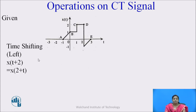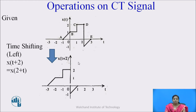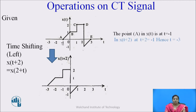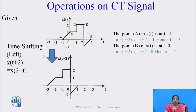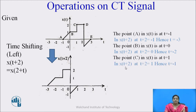This is x(t). Applying the time shifting property towards the left side by 2 units gives x(2 + t). Point a in x(t) is at t = -1; in x(t+2) it shifts to t = -3. Point b in x(t) is at t = 0; after shifting it is at t = -2. Point c in x(t) is at t = 1; after shifting it moves to t = -1. Point d in x(t) is at t = 2; after shifting it moves to t = 0. Point e in the new signal is at t = 1.